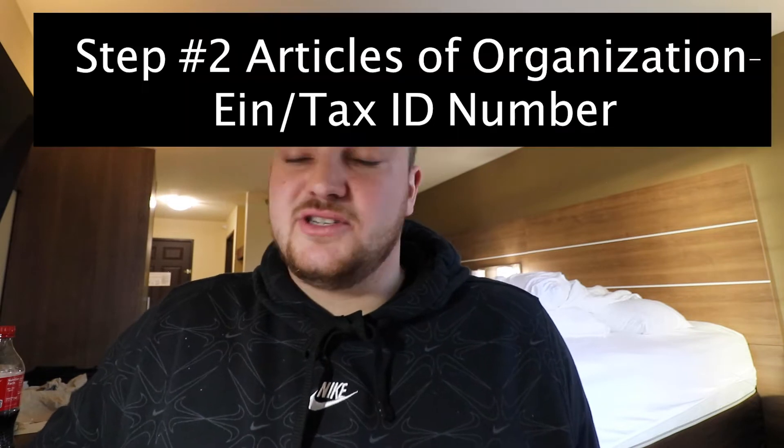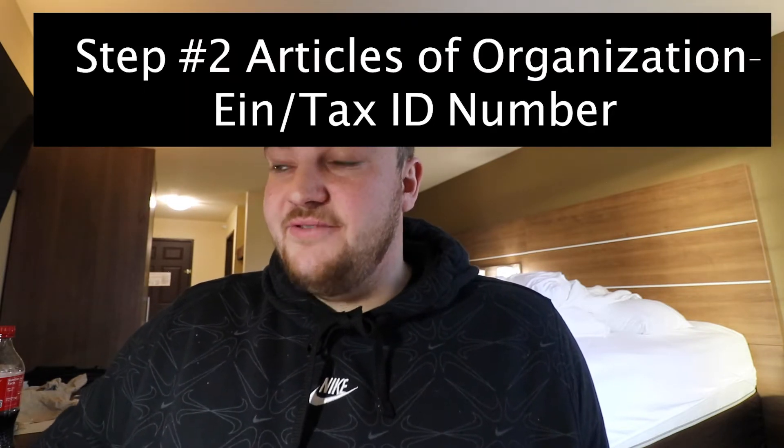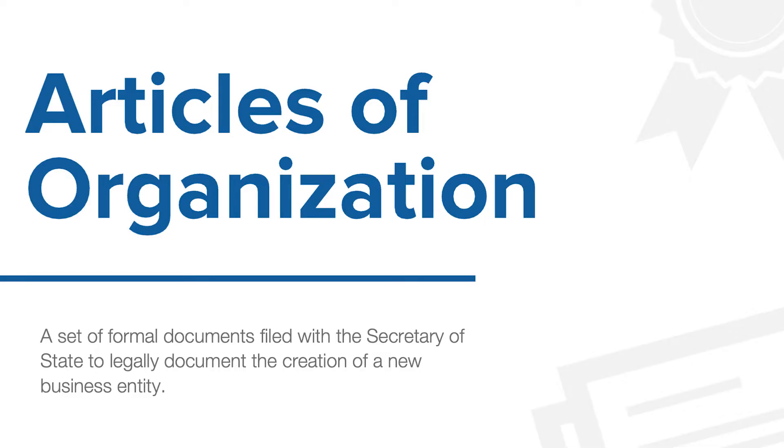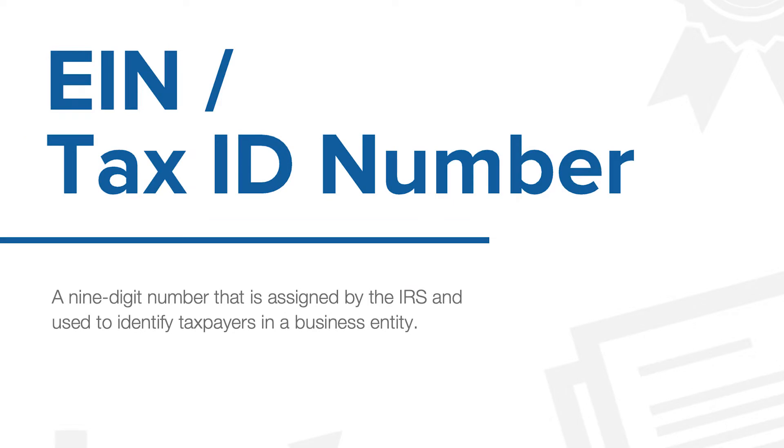Step two: I used Inc File for this — it's a service that helps you complete the documents you need. You're going to need articles of organization, and you're also going to need to fill out and get a tax ID slash EIN number. Inc File also offers other services for your business such as getting domain names, creating custom emails, and business templates. So to recap: step one, create a business name; step two, create an EIN slash tax ID number and do your articles of organization.